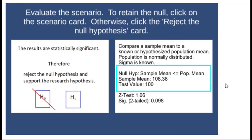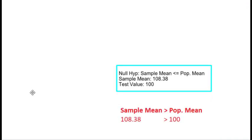What about this scenario where, again, sample mean according to the null hypothesis is less than or equal to the population mean. But the sample mean is 108.38, and our population mean is 100. In this case, the sample mean, contrary to the null hypothesis, is actually larger than the population mean.